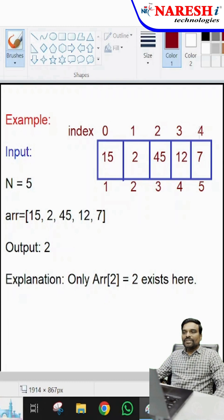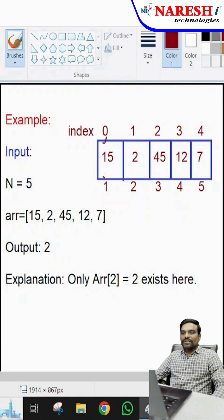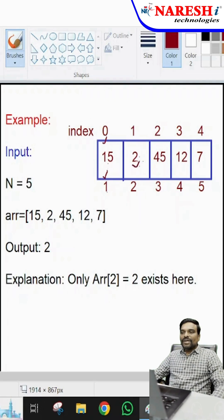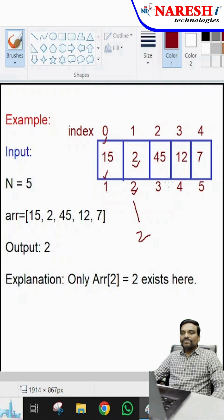But in the problem definition it says to take the index as 1 onwards. Where is the value equal to the index value? Is 15 equal to 1? No. Is value 2 equal to 2? Yes, so such elements you have to display. 45 equal to 3? No. 12 equal to 4? No. 7 equal to 5? No.